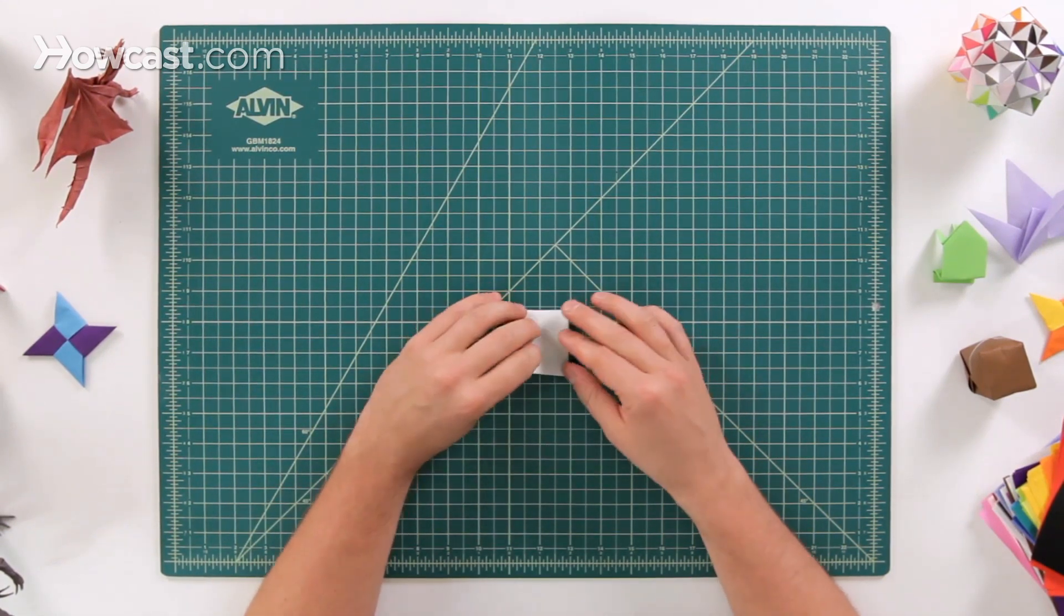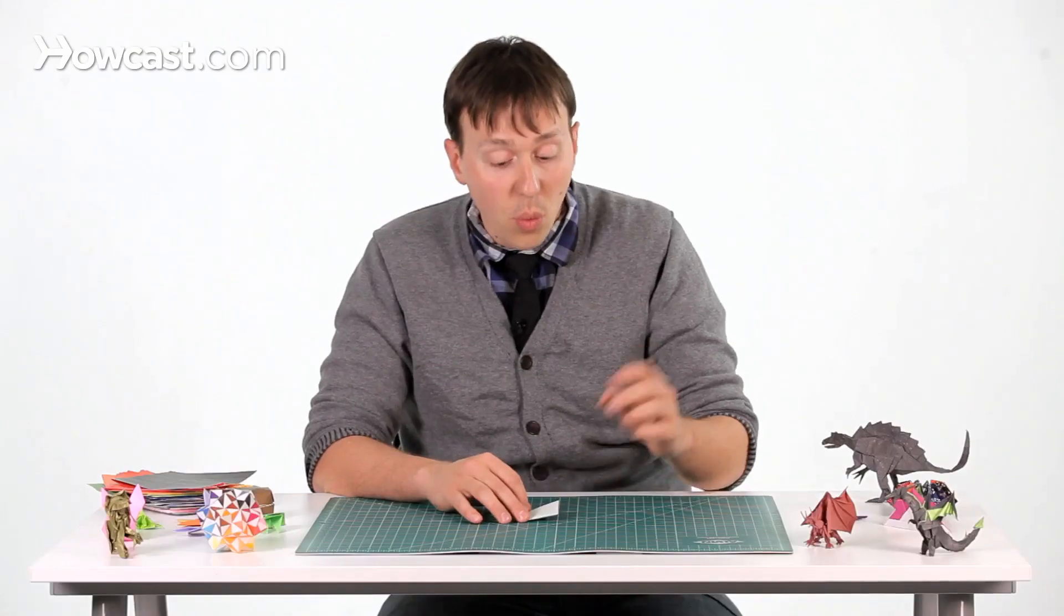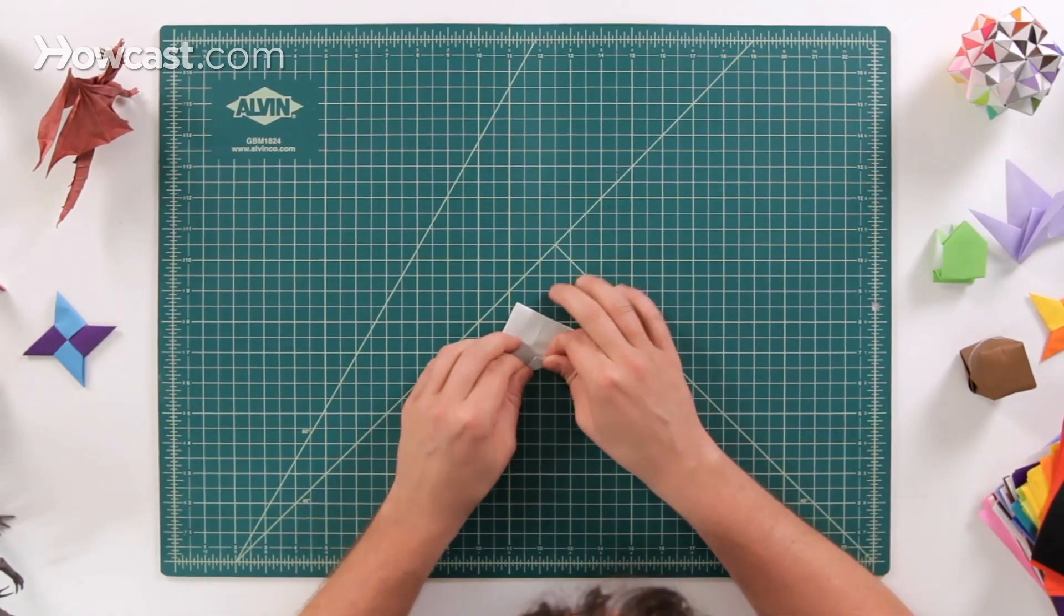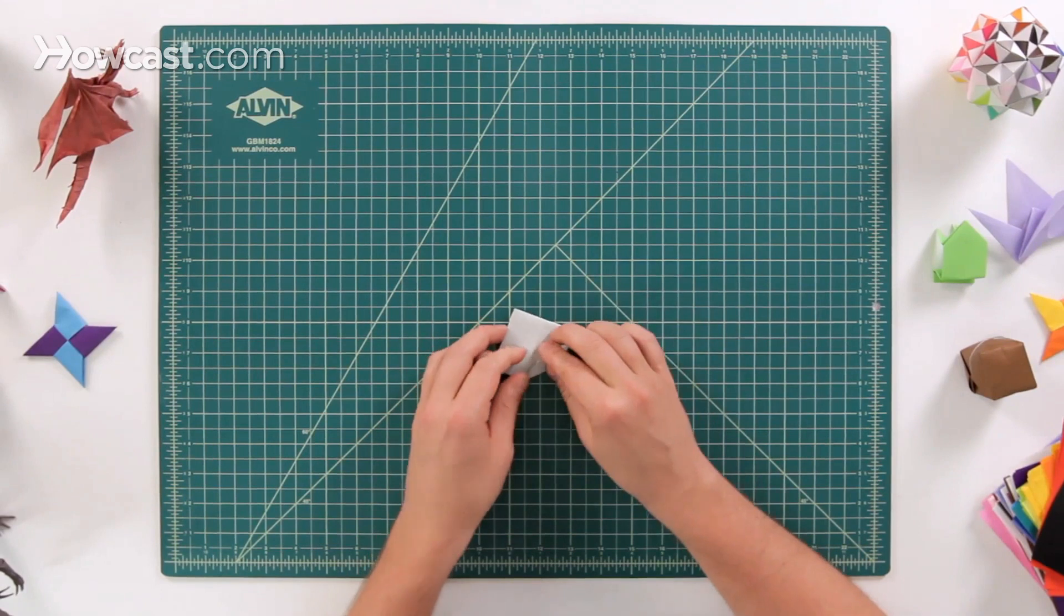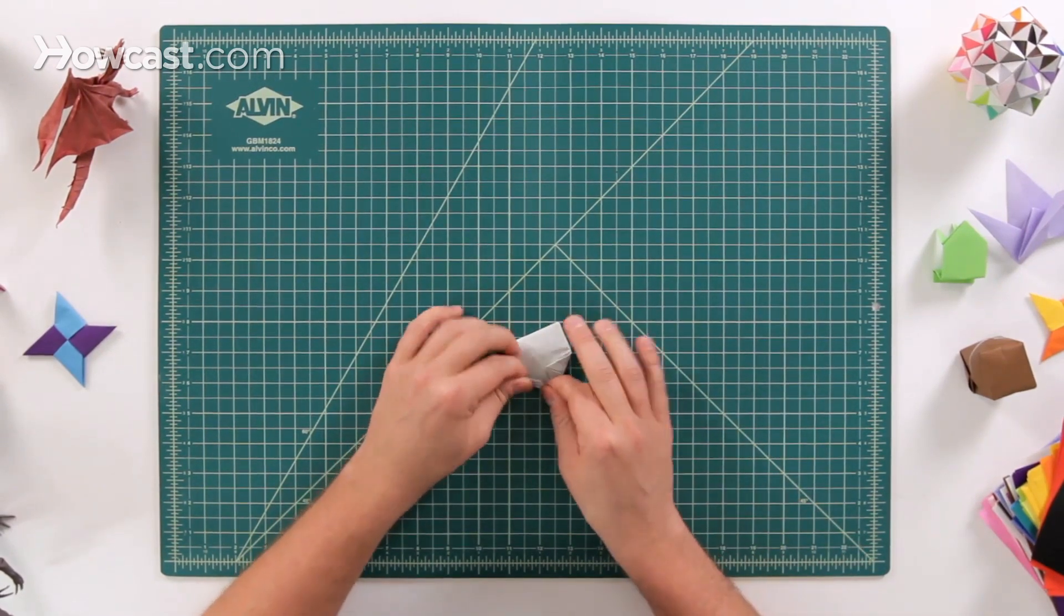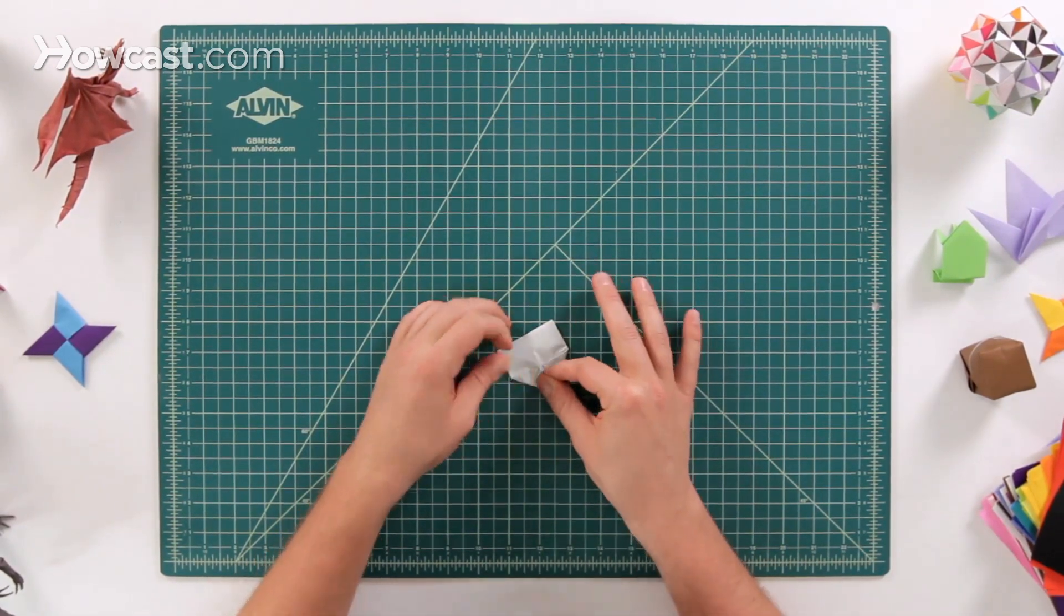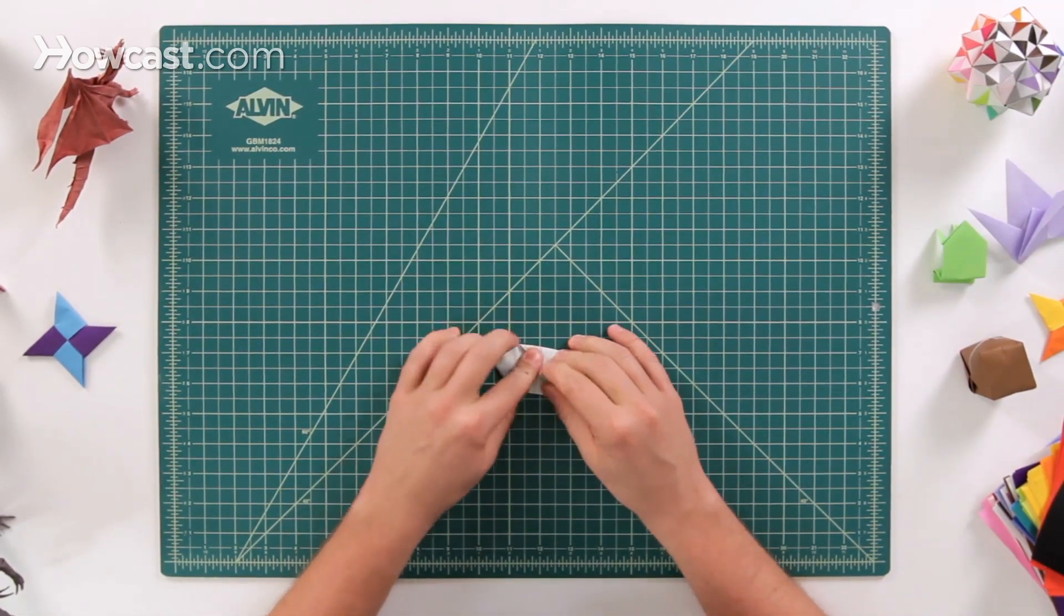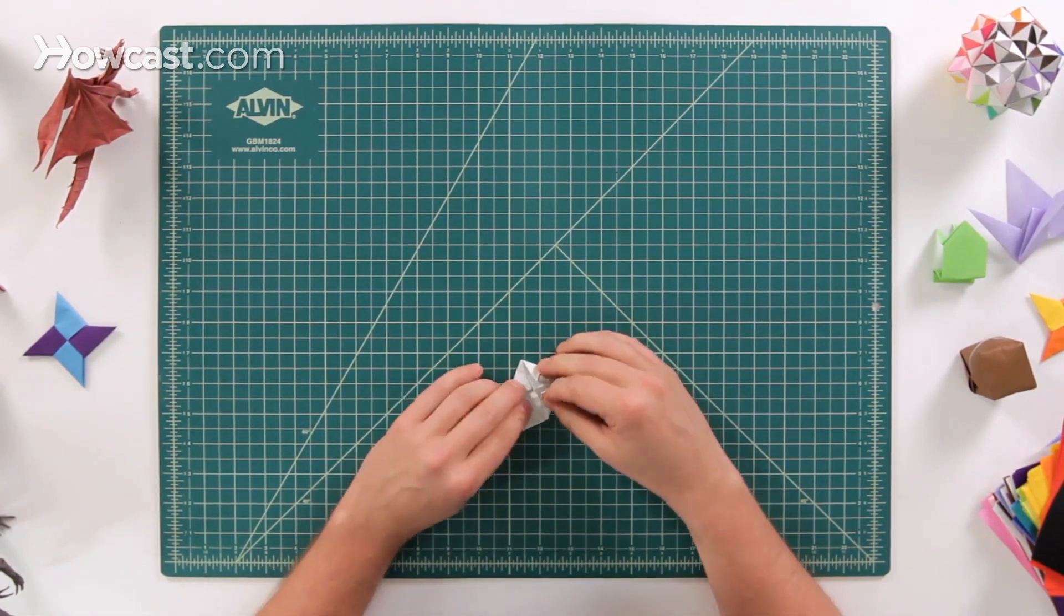And now flip the whole thing over. And we're going to do one more blintz base, and this is after we've folded the paper over so it's going in the opposite direction. So that is the fourth blintz base that we've done on that sheet of paper. And it does get a little thick here, and it does get a little tiny.